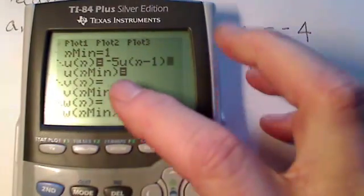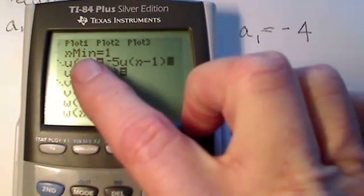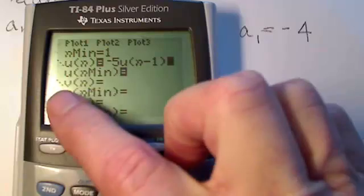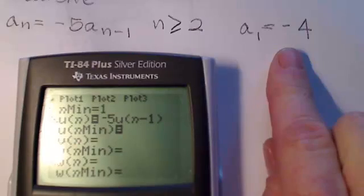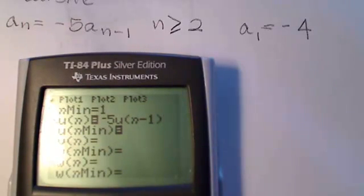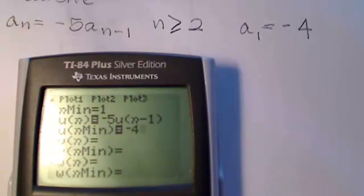So now the u of n min, well, n min is 1, so that means my first term. My first term is negative 4. So that's why in this case you have to enter a value for that first term because it's defined recursively.